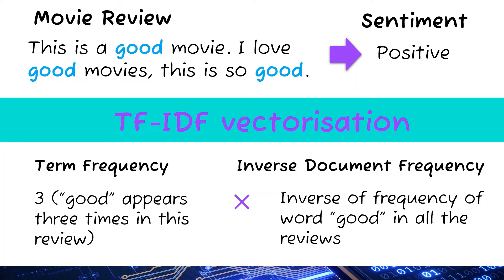The third step is TF-IDF vectorization. TF stands for term frequency and IDF for inverse document frequency. TF-IDF finds unique words associated with a certain sentiment. For instance, the word 'good' is associated with positive reviews — the more it appears in a review, the higher its term frequency; since it appears mainly in positive reviews, its inverse document frequency is also high. TF-IDF is the product of these two, making it a strong predictor of positive sentiment.